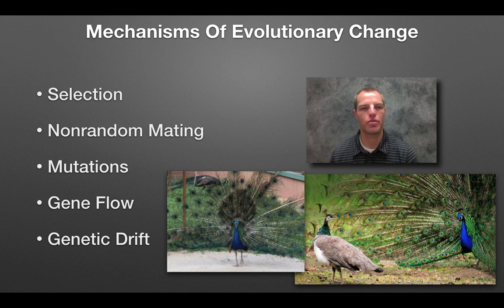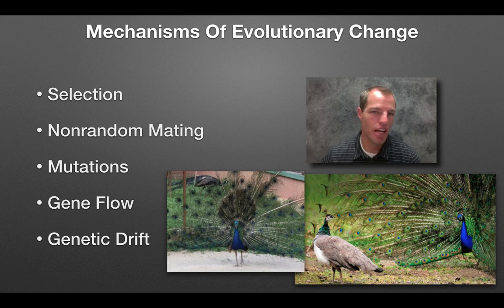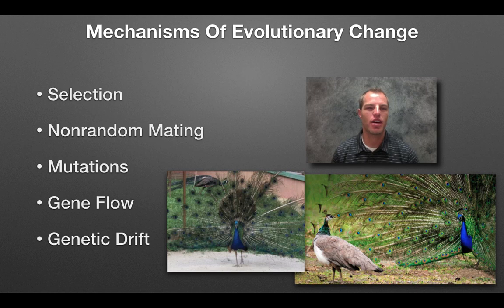Mutations are when there are changes in the DNA that could change the allele, which could also change the protein, which will change the physical trait. If that's happening, we're going to get a new type of allele introduced. If it's favorable and natural selection chooses it through Darwin's process of natural selection, then we could see that happen more often.